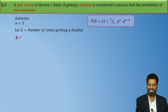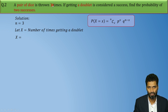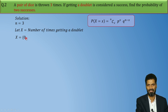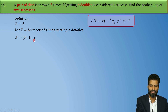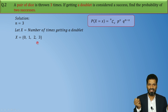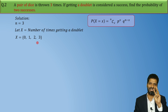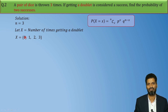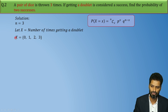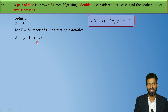So you tell me, what can the values of X be? If we throw the dice three times, it's possible we get no doublet at all, or we get a doublet once, or twice, or the maximum number of times we can get a doublet is three times. So when you throw a pair of dice 3 times, X can be 0, 1, 2, or maximum 3. These are the possible values of X.